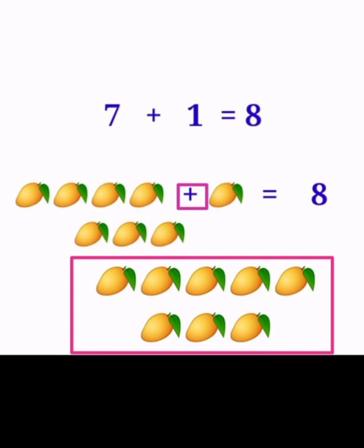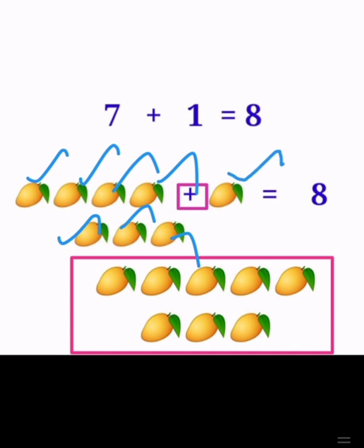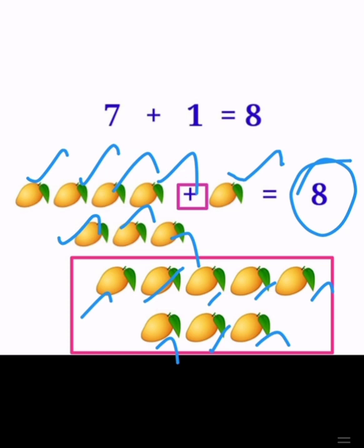7 plus 1 is equal to 8. How many mangoes are given here? Shall we count? 1, 2, 3, 4, 5, 6, 7. Adding 1 more. Totally how many mangoes? 1, 2, 3, 4, 5, 6, 7, 8. Totally how many mangoes? 8. The answer is 8. 7 plus 1 is equal to 8.